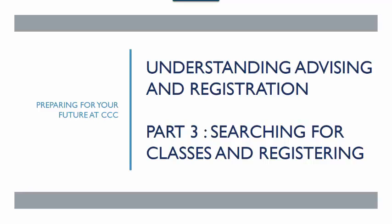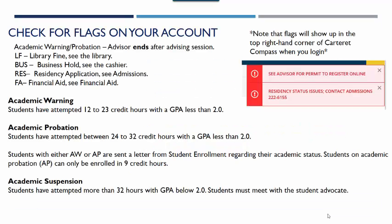Once you and your advisor have gotten together and approved your classes for next semester, it is time to search and register for classes through Carteret Compass. Make sure you check for flags on your account that may prevent you from registering. When you log into Carteret Compass, flags will show up in the top right-hand corner. Some examples of flags include a library fine, a business hold, residency application, or financial aid. You will need to visit these areas and get these flags taken care of before you are allowed to register for classes.